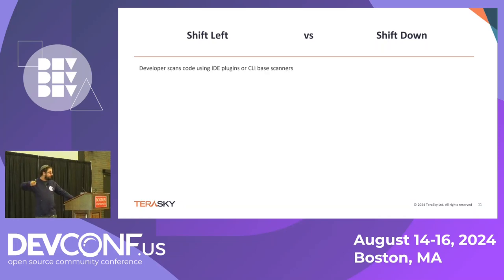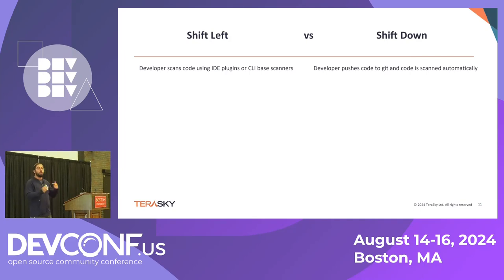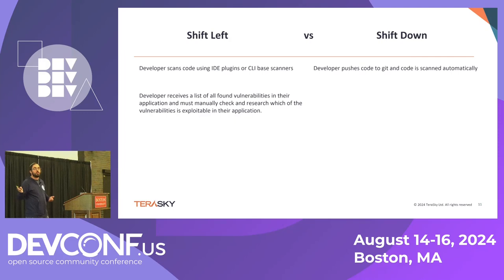Let's look at examples. In the shift left approach, developers scan code using IDE plug-ins or CLI-based scans. In the shift down approach, the developer pushes to Git and the code is scanned automatically. You can do both, but without having it in Git, you face the issue of: is the developer actually going to scan his code? Did he forget that step? Which version of the scanner is he using? By shifting it down to the platform, we raise our quality and don't add extra steps for the developer.